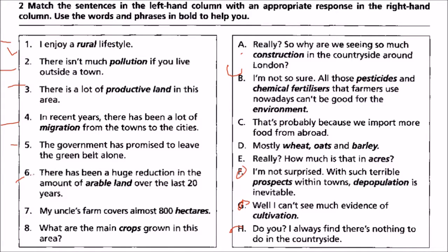Six: there has been a huge reduction in the amount of arable land over the last 20 years. We match it with C — that's probably because we import more food from abroad.